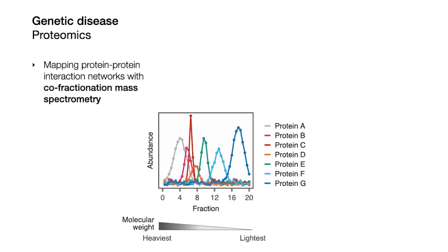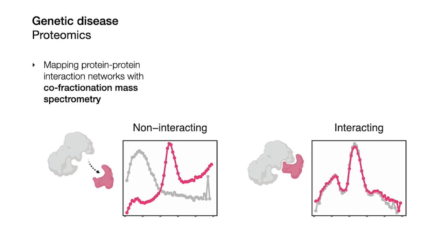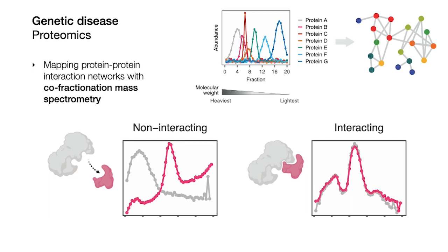If a pair of proteins didn't interact with one another, they would have dissimilar elution curves. But a pair of interacting proteins would have tightly correlated elution curves. And so the idea was that by measuring every protein's elution curve at once, you could simultaneously identify every pair of interacting proteins in the sample with a single experiment.